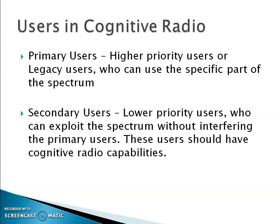Basically in cognitive radio we have two types of users: one is the primary user and the other is the secondary user. Primary users are those who have the license — we call them licensed users because they have already paid to use a specific part of the spectrum. Whereas secondary users are called unlicensed users; they don't have the capability to access the paid spectrum, but they can use those paid resources without interfering with the primary users. We call them secondary users.